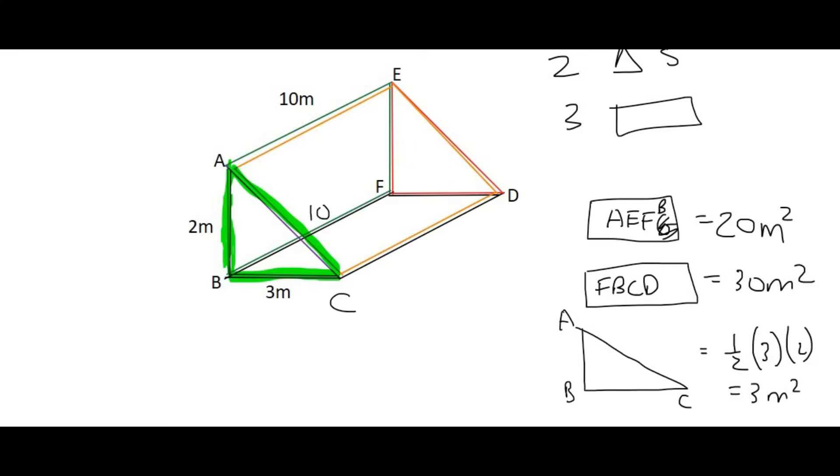Would you agree that the triangle on the opposite side, so this one over here, is exactly the same? And so we can straight away work out that one's area, or we can just write it down. So that'll be triangle EFD, well that's also going to have an area of 3 meters squared.